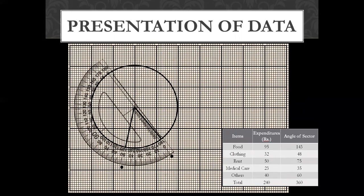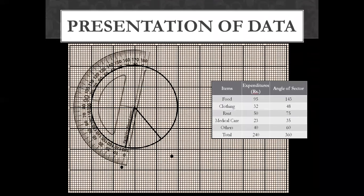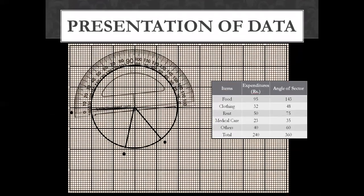We will do the same with rent. We rotate the protractor to the clothing line and, after matching 0, we mark 75 degrees and draw the line from the center to the boundary. Then for medical care, we rotate the protractor to the rent sector, match 0, and place the angle of 35 degrees, drawing the line toward the center.